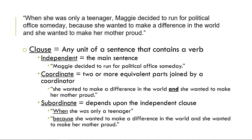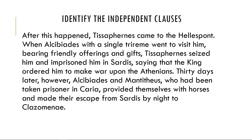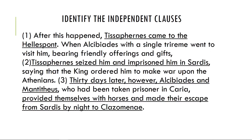Let's see if you've got these ideas straight with some examples. Pause the video again and identify all of the independent clauses in the Xenophon sentence — there should be one or more for each sentence. Here's what you should have: 'Tissaphernes came to the Hellespont' is the main clause of the first sentence; 'Tissaphernes seized him and imprisoned him in Sardis' is the second; 'Alcibiades and Menithius provided themselves with horses and made their escape from Sardis by night to Clazomenae' is the third. Subordinate clauses are littered before, in the middle, or after — they can come in any order.